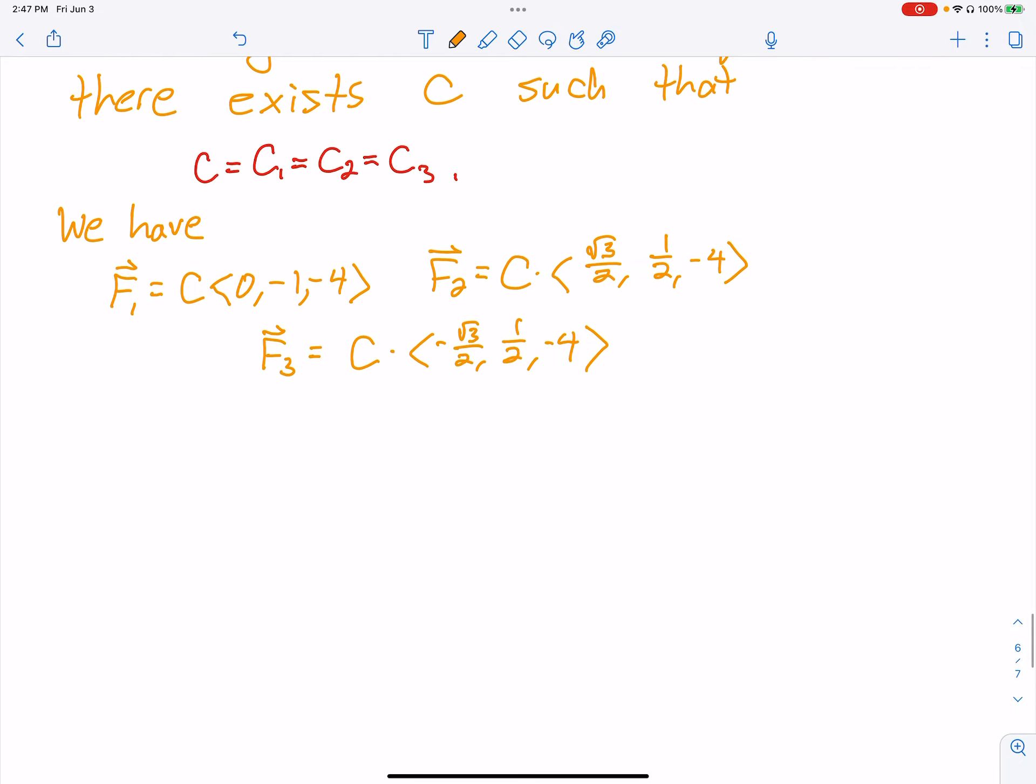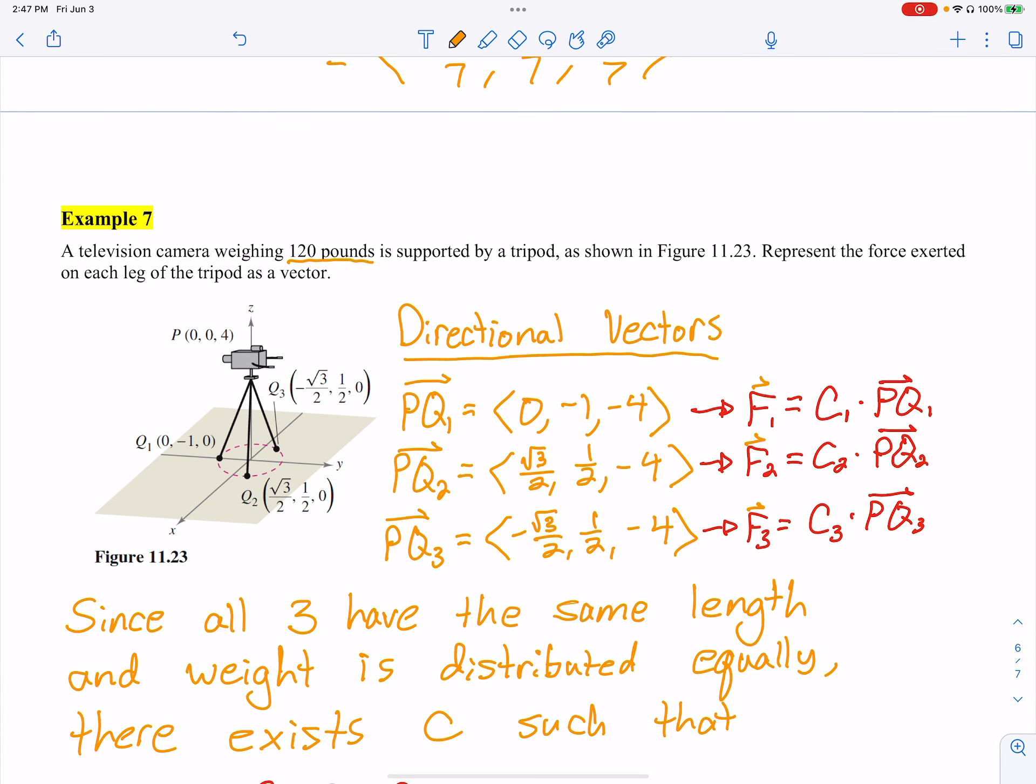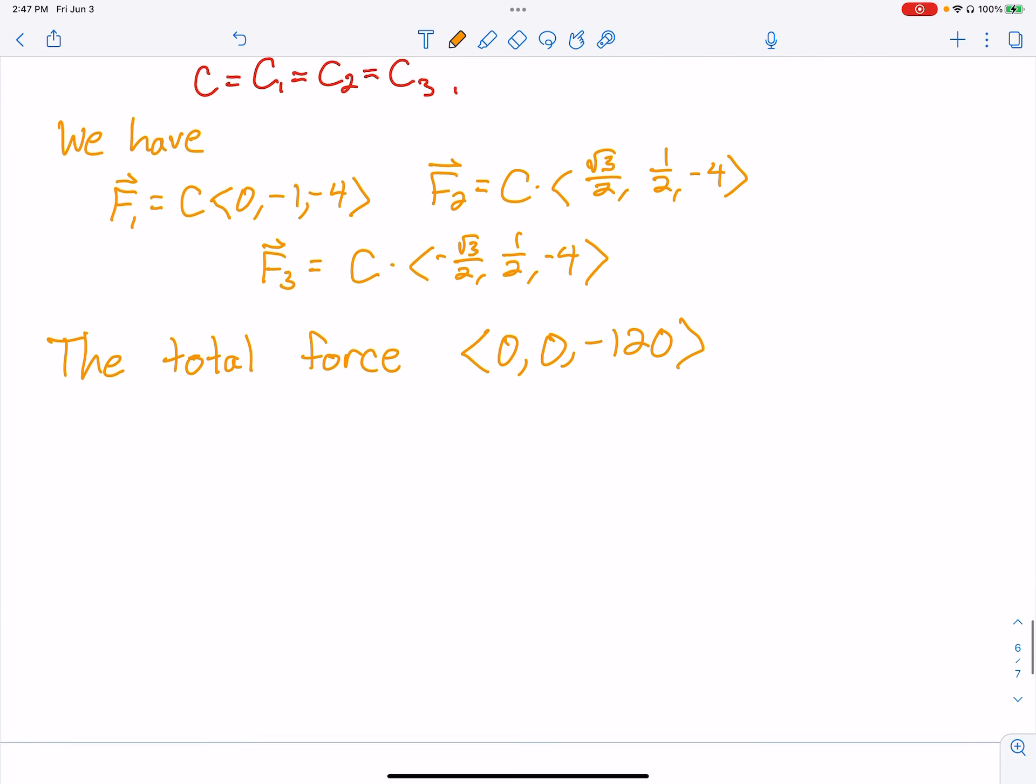That's why we can write down what we did. So the total force, let's think about that. Total force is what's coming down on the camera. The camera is just going straight down. So we have <0, 0, -120>, because that's what the camera weighed. The weight is 120 pounds, so that means gravity is pushing all that down, right?